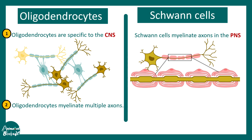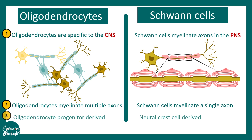Oligodendrocytes can myelinate multiple axons — so one oligodendrocyte to many axons — whereas Schwann cells can only myelinate a single axon. There is a one-to-one mapping between a Schwann cell and axonal myelination.